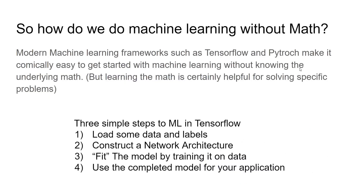Modern machine learning frameworks handle the hardest part — the backpropagation calculus — which involves working with gradients in thousands of dimensional spaces, roughly calculus three level mathematics. You don't need to know any of the gradients yourself because TensorFlow and PyTorch do the backpropagation math for you. There are only a few things you actually have to do: load your data and labels, construct the network architecture, then call the fit method to train — which TensorFlow does for you in a single function call. Once the model is trained, you can use it for your application.